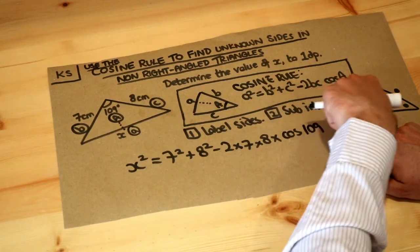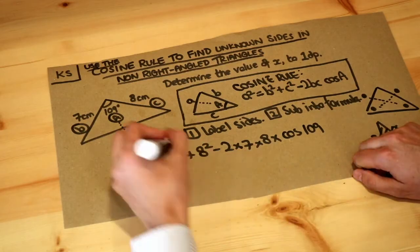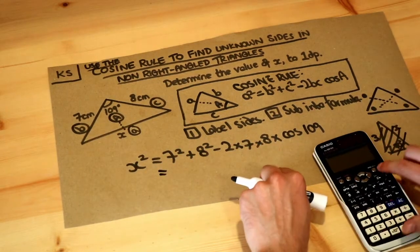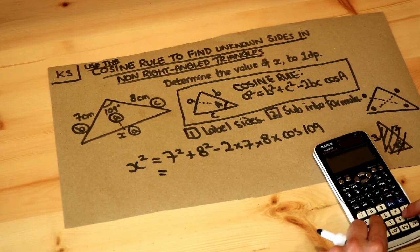Remember, when you have things next to each other, it just means you times them together. Now I can just shove this whole thing on my calculator, the whole right-hand side.